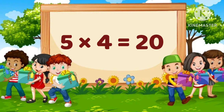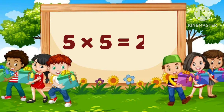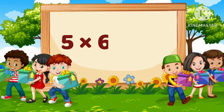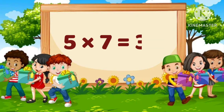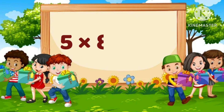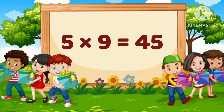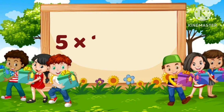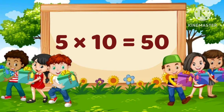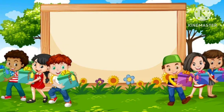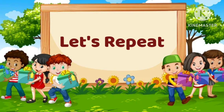5 times 5 is equal to 25. 5 times 6 is equal to 30. 5 times 7 is equal to 35. 5 times 8 is equal to 40. 5 times 9 is equal to 45. 5 times 10 is equal to 50. Now let's repeat the table.